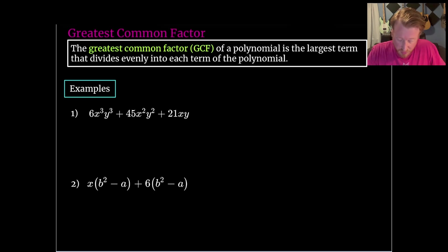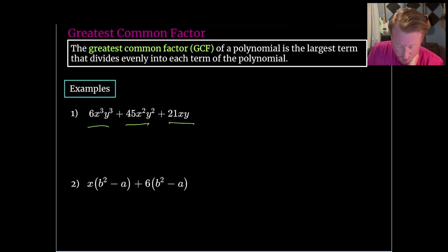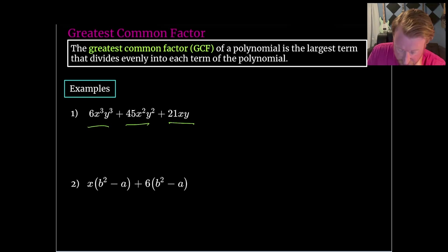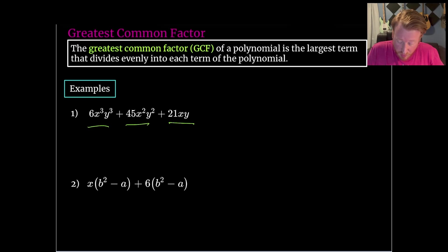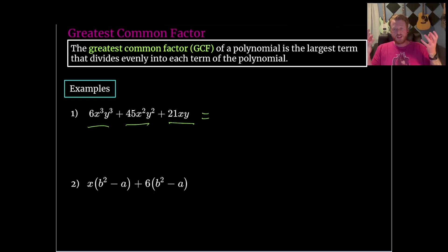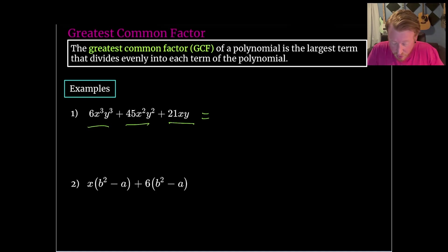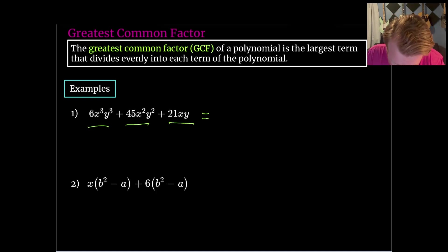This first polynomial has three terms: 6x³y³, 45x²y², and 21xy. My approach is to first look at the coefficients on each one and see if I can find a GCF for those. Looking at the 6, the 45, and the 21, I'm looking for the greatest common factor between those, and I believe that is 3.